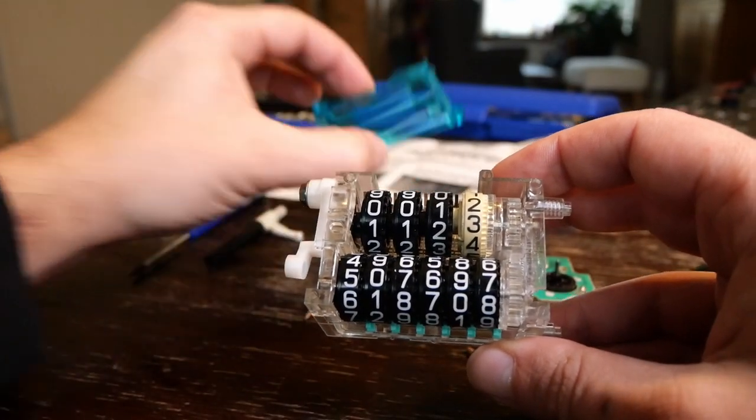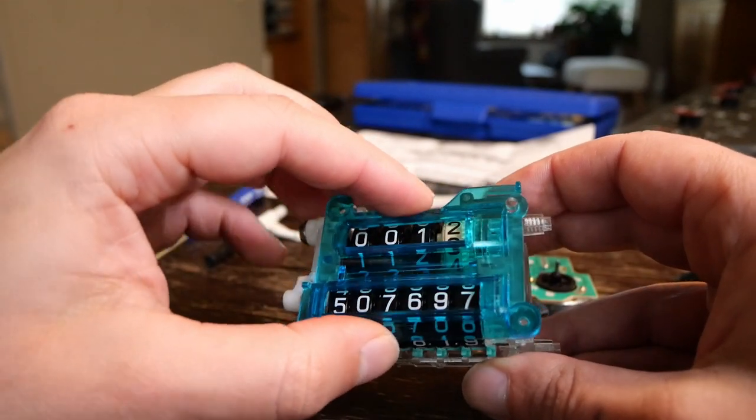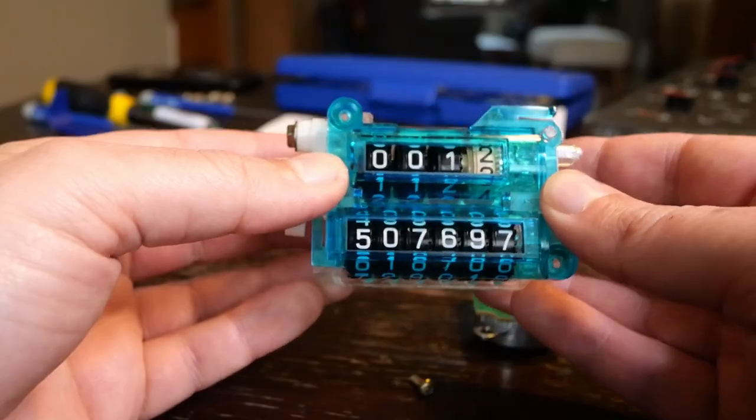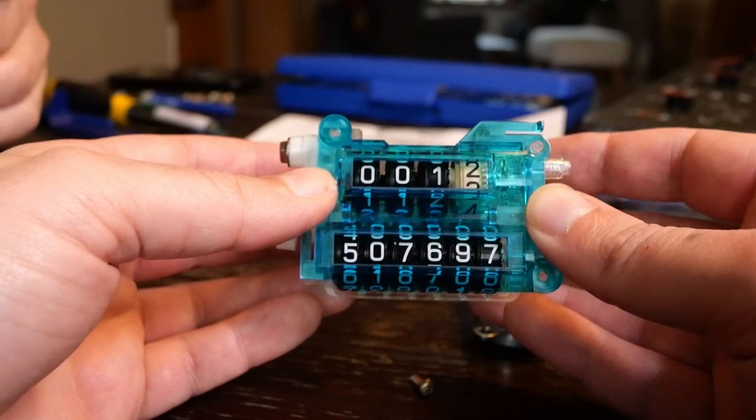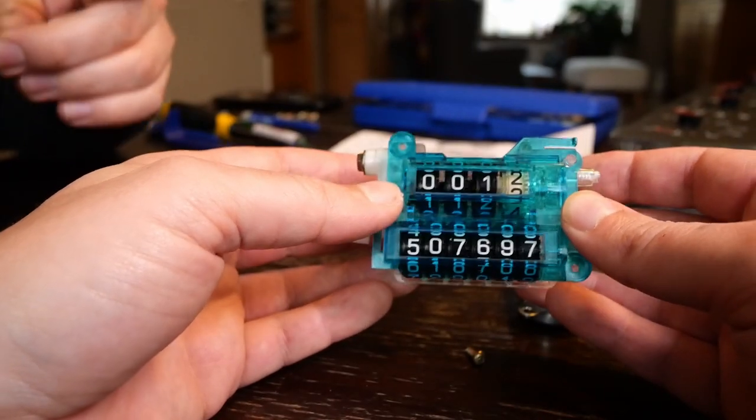Let's see how it looks with the front plate on. 5, 0, 7, 6, 9, 7. That seems about right. Yeah. Good. Let's put it all back together.